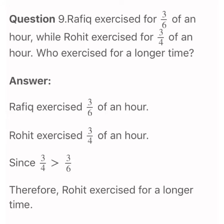Question number 9: Rafi exercised for 3 by 6 of an hour while Rohit exercised for 3 by 4 of an hour. Who exercised for a longer time? The numerators are the same, so we compare the denominators. According to the rule, the fraction with the lesser denominator is always the greater fraction. So 3 by 4 is greater than 3 by 6, meaning Rohit exercised for a longer time.